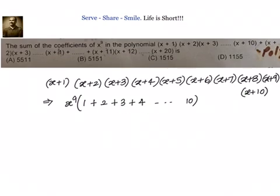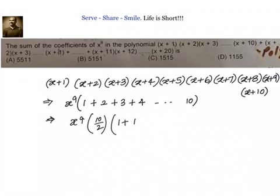So that is equal to — we can simplify this — x power 9 into this arithmetic progression. I know there are 10 terms, so I can write down 10 by 2 into first term plus last term, that is 1 plus 10. So which is 5 into 11, which is 55. So the coefficient of x power 9 in the first term of the given polynomial is 55.